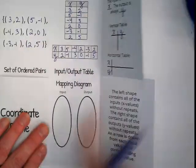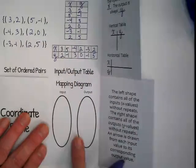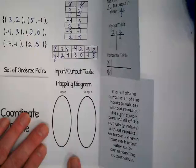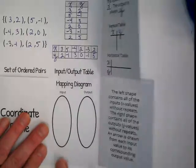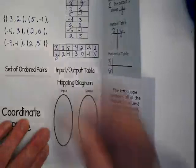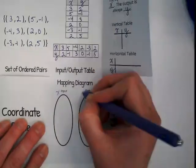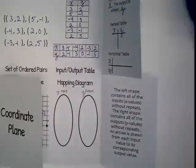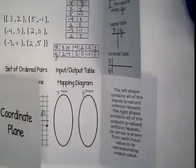We're going to take the same information that we've seen in these others, and we're going to put them in these ovals. Who's seen this before? That's what I thought. It's a new idea. The one big difference is for the input and the output, if the number repeats itself, we only put it in the oval one time.